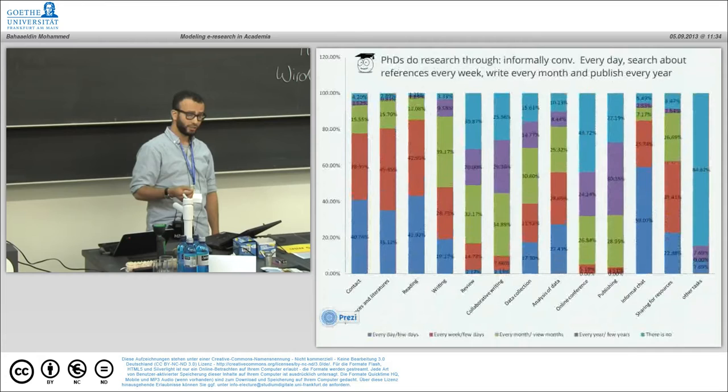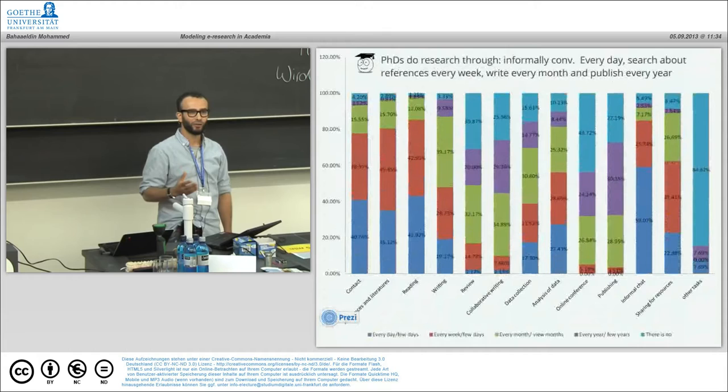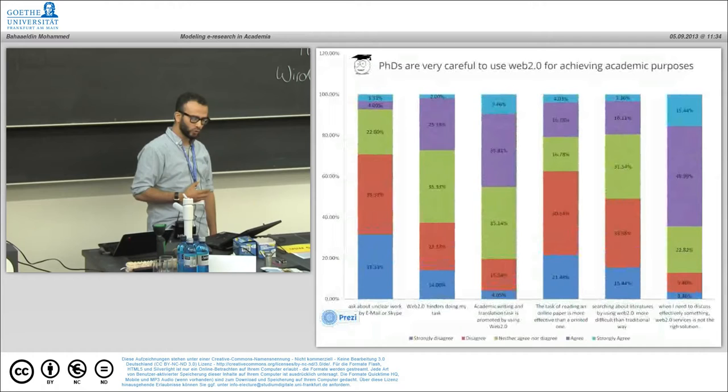Students do research through informal conversation every day, search for references every week, write every month, and publish every year. This is the exact profile of PhD students we collected. Attitudes towards using web 2.0 show they are very careful to use web 2.0 for achieving academic purposes. We will see exactly why.